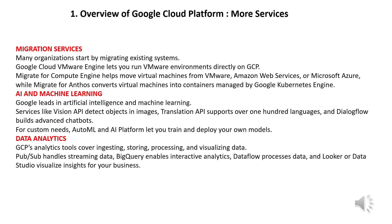Google leads in artificial intelligence and machine learning services. Vision API detects objects in images, Translation API supports over 100 languages, and Dialogflow builds advanced chatbots. For custom needs, AutoML and AI Platform let you train and deploy your own models.